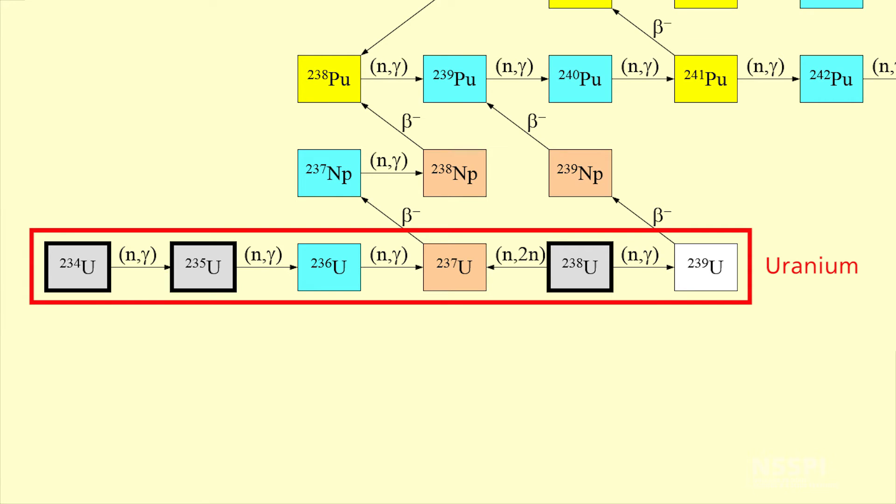The only naturally occurring isotopes of uranium are U-234, U-235, and U-238. And of those naturally occurring isotopes, 99.3% of all that naturally occurring uranium is U-238. Only a very small fraction, 0.7%, is U-235, and there's a very small fraction of U-234, much less than that.